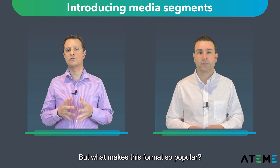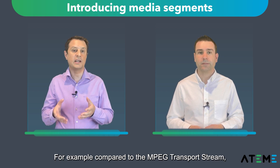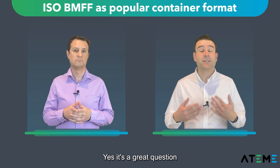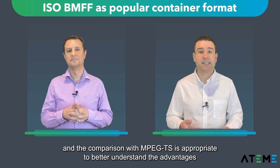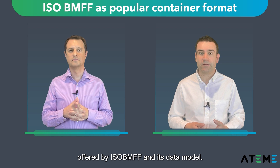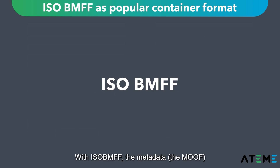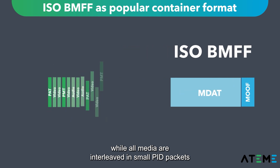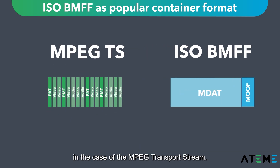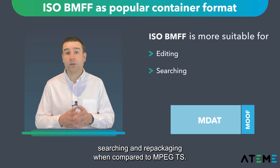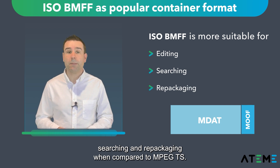What makes this format so popular compared to the MPEG Transport Stream, which is the media container used in Apple HLS? With ISO BMFF, the metadata — the MOF — is separated from the video data, the MDAT, while all media are interleaved in small PID packets in the case of MPEG Transport Stream. This makes ISO BMFF more suitable for editing, searching, and repackaging when compared to MPEG-TS, thus its growing popularity in the OTT streaming industry.